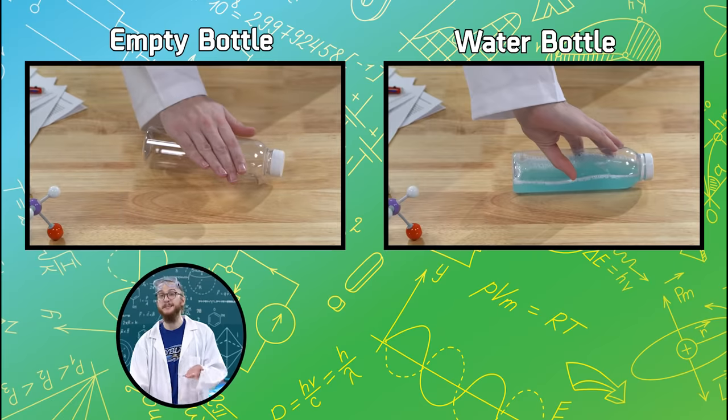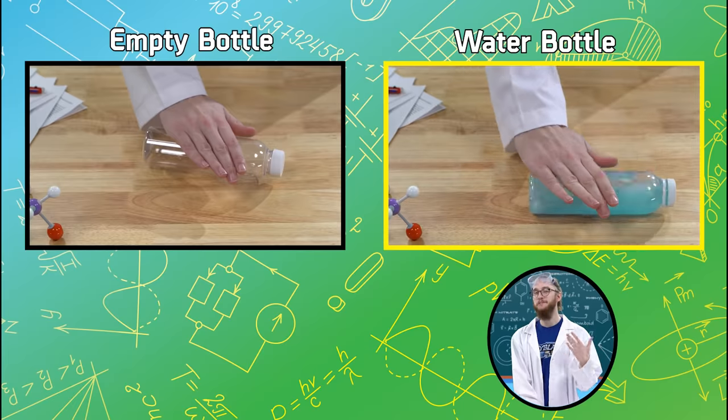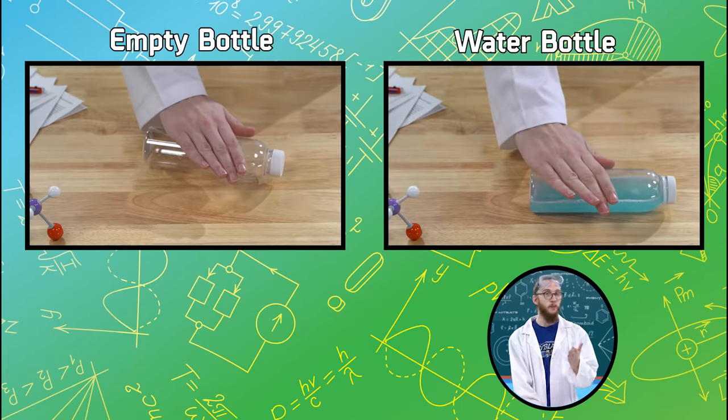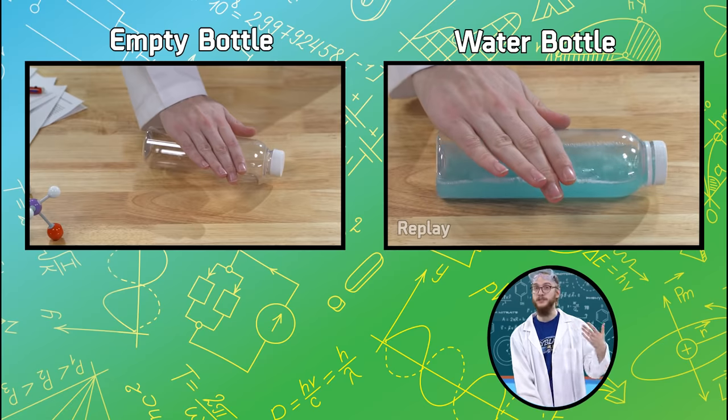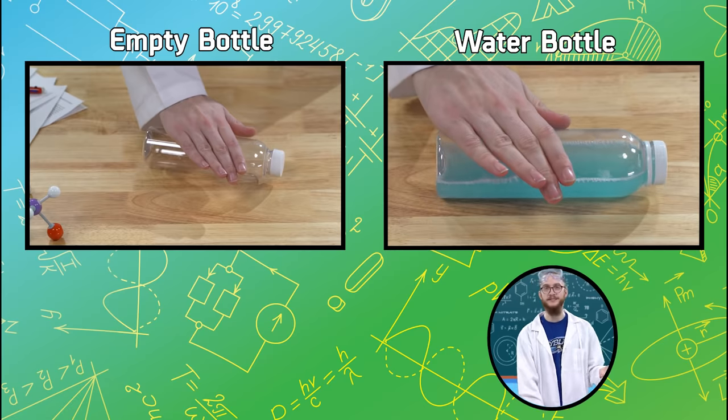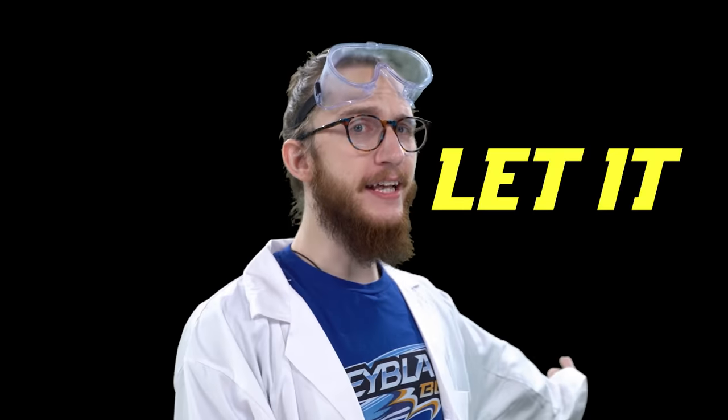The empty bottle stopped spinning completely, and I'm not at all surprised. But when the bottle filled with water stopped, the water kept moving. That's because we stopped the bottle and not the water. So the water's inertia kept it doing what it was already doing, and you could see it moving inside. Three, two, one, let it sip.